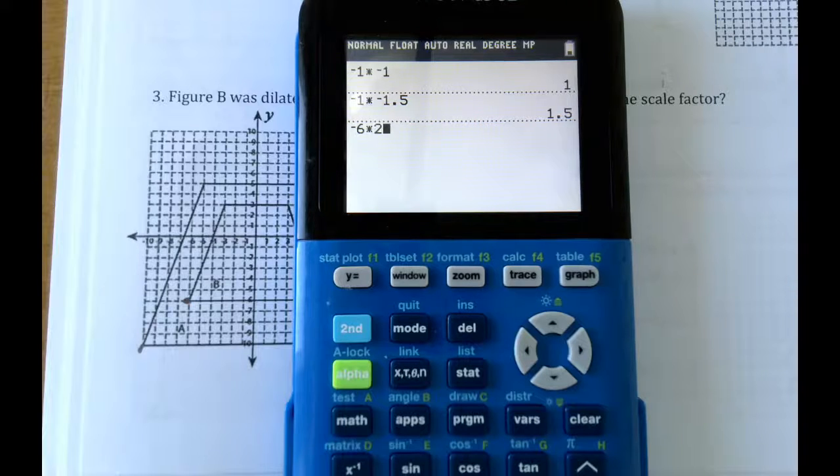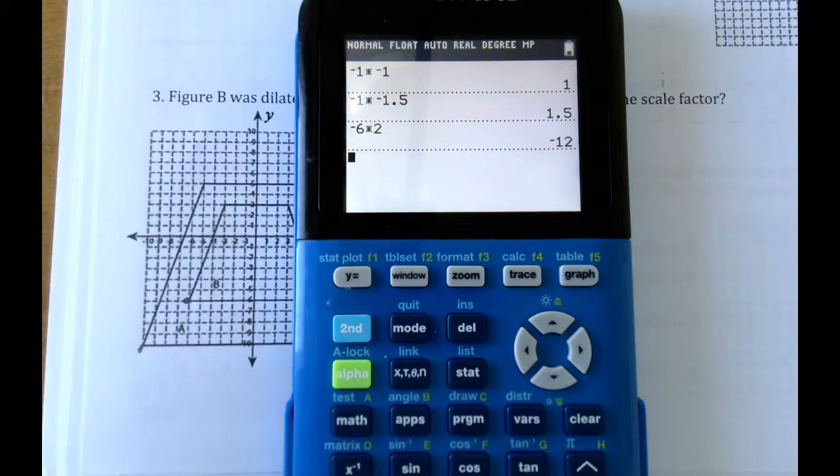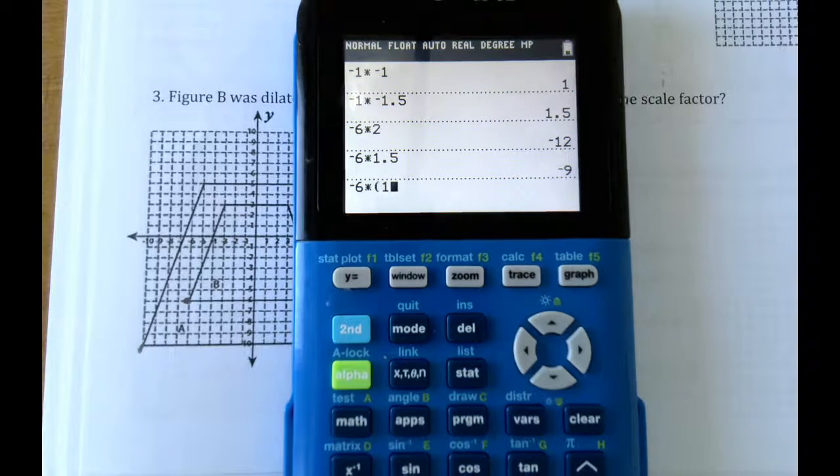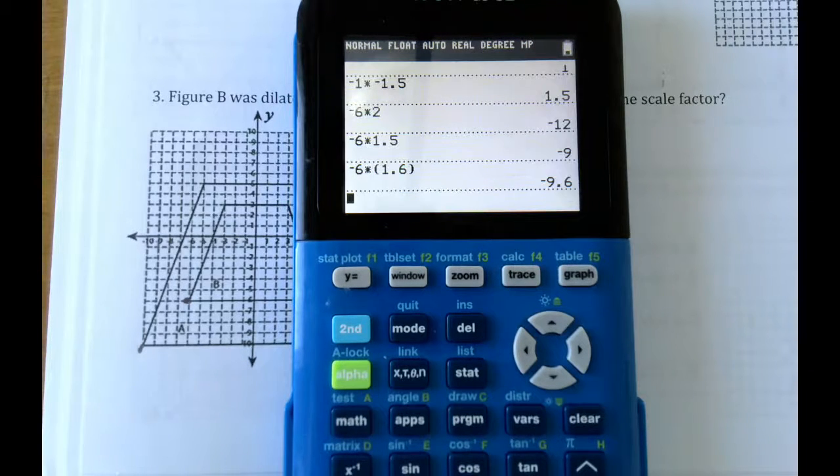So if I do negative 6 times 2, I know that that's negative 12. That's a little bit too big. What about negative 6 times 1.5? Oh, that's negative 9. So halfway between 2 and 1.5 would be like 1.6. Oh, we're getting closer.